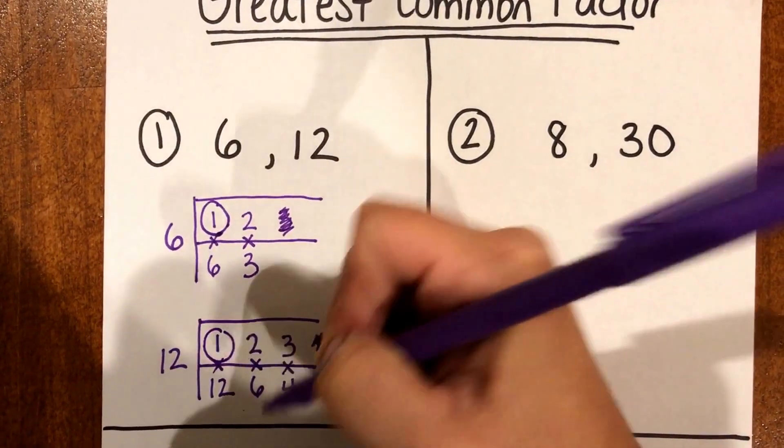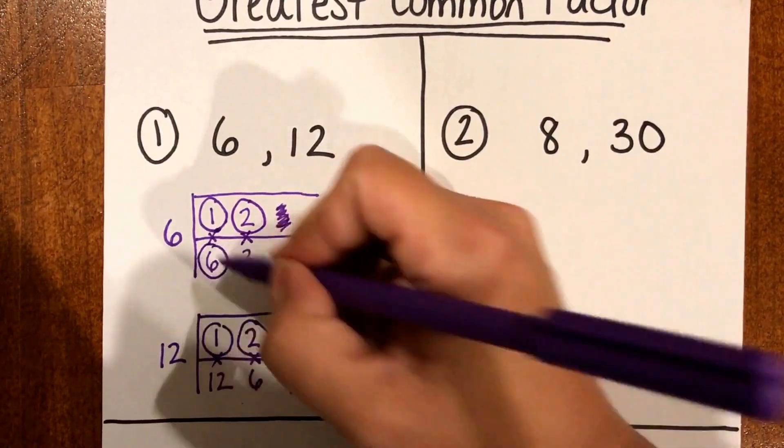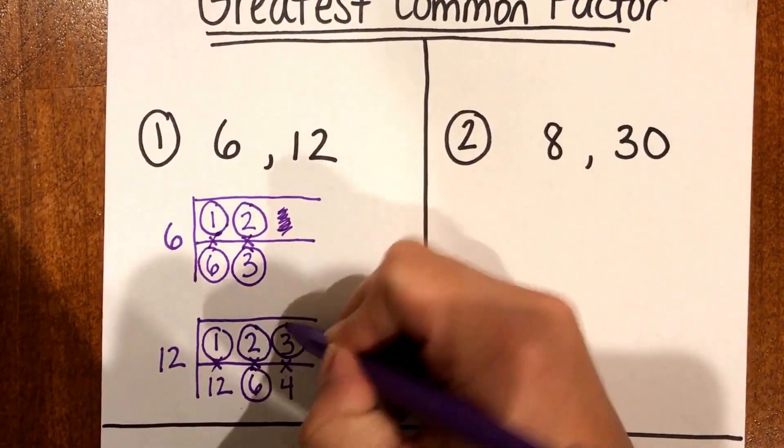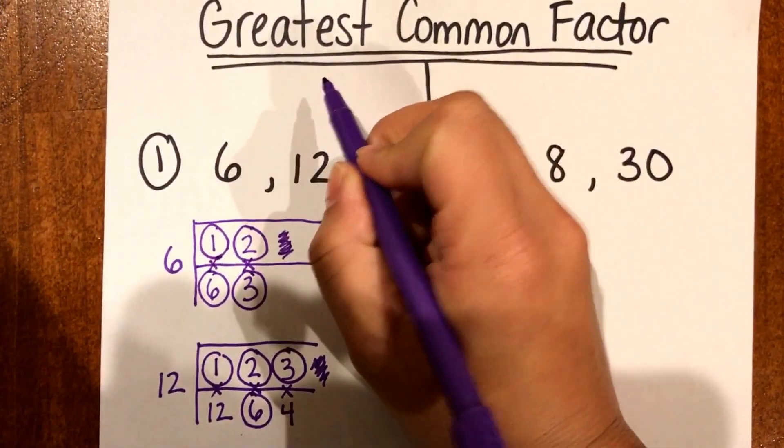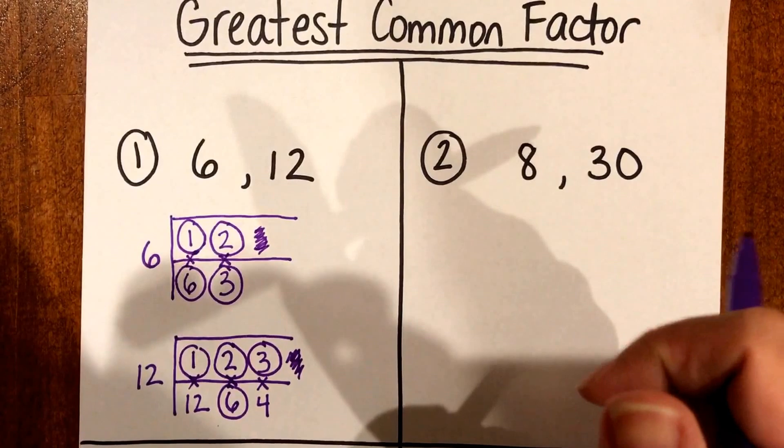So I see 1 is the same, I see 2 is the same, I see 6 is the same, and I see 3 is the same. And since it's the greatest common factor it just means the biggest number that's the same between the two.